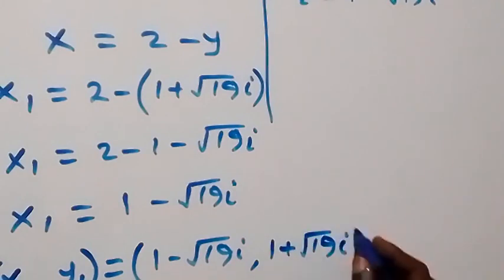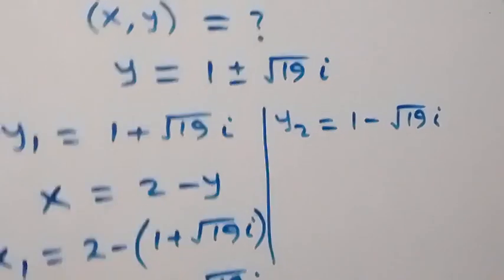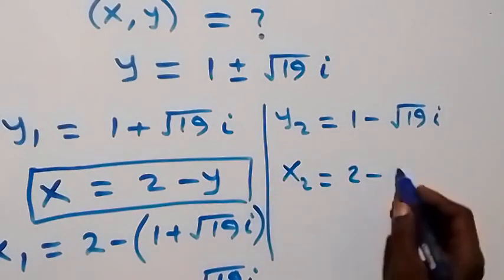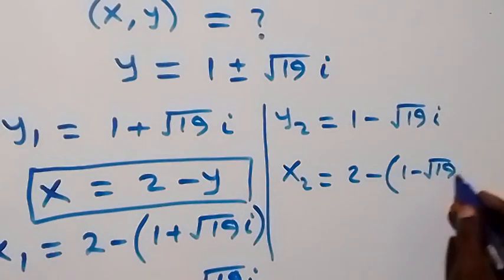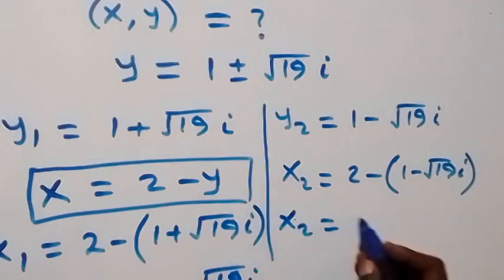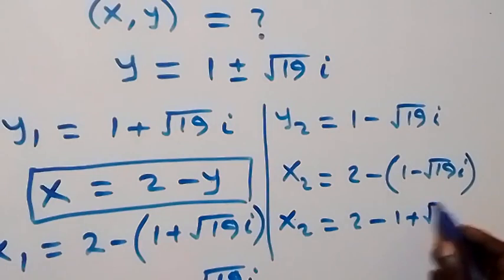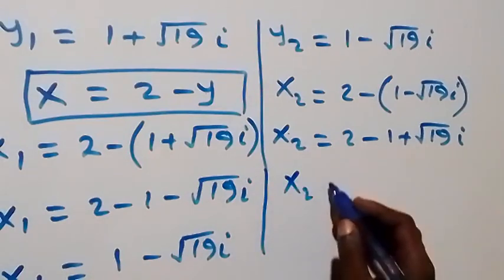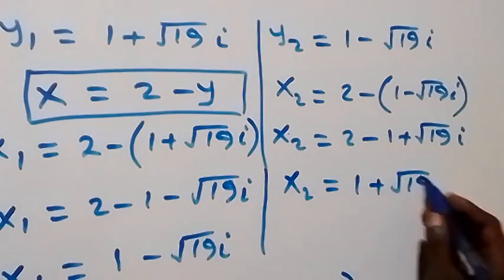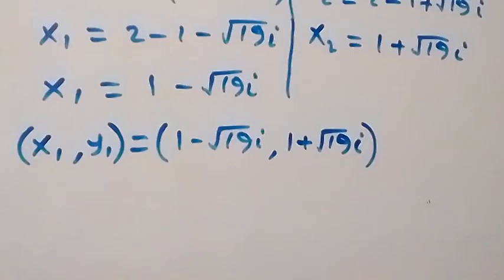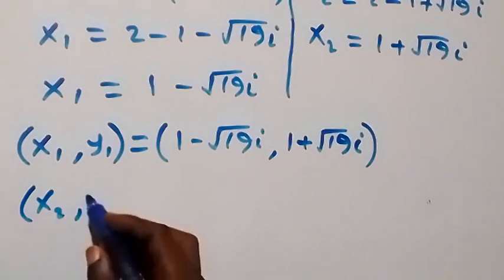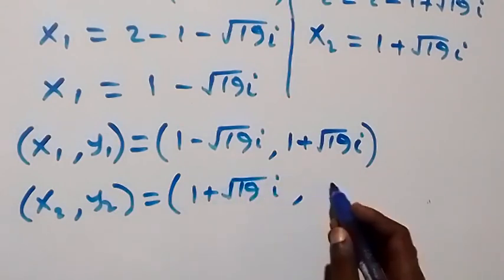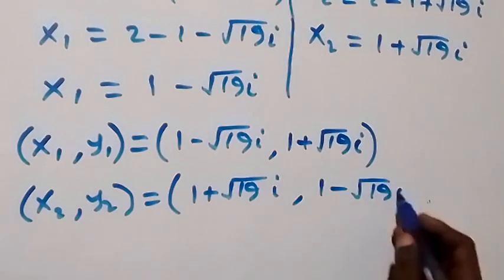Also solving for x2 using y2: x2 equals to 2 minus y2, which is 2 minus (1 minus root 19 i). The second solution set (x2, y2) equals to (1 plus root 19 i, 1 minus root 19 i).